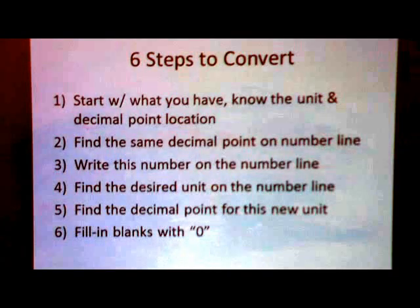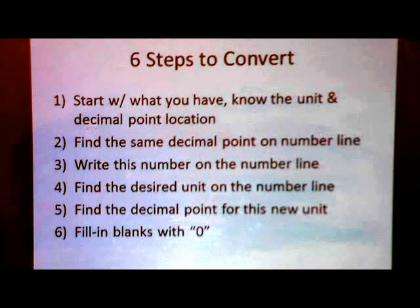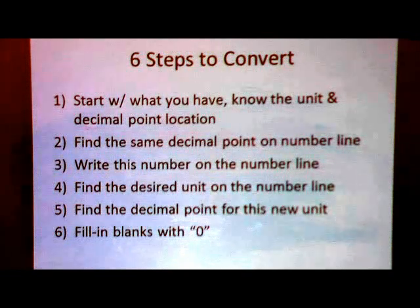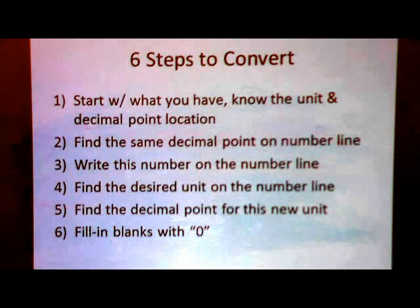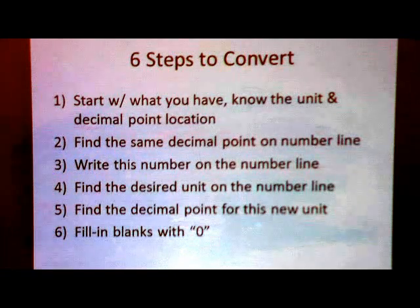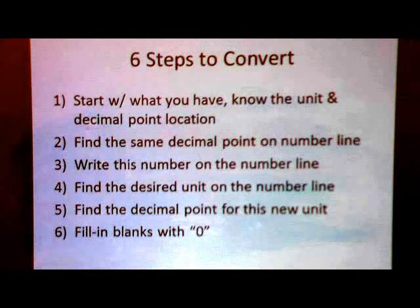Before we get started, I want to review the six steps for solving this problem. Step one: start with what you have — know the unit you begin with and find the decimal point for that unit. Step two: find that same decimal point on the number line, which you should have committed to memory. Step three: write the given number on that number line. Step four: find the desired unit on the number line. Step five: find the decimal point for the new unit. Step six: fill in the blanks in between with zero — and that's your answer.